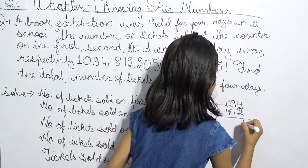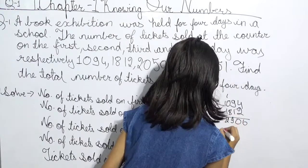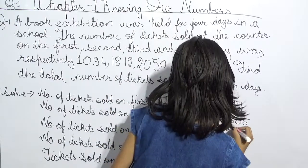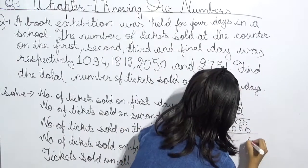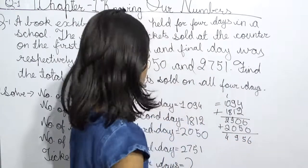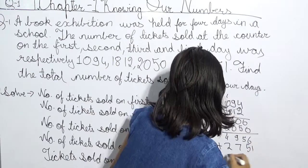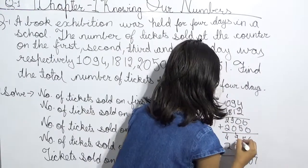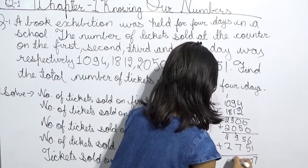Here we have 6, 10, carry 1, 9, and here we have 2. Now we have 2050, then 6, 5, 9, 4. And then 2751. We get 7, 0, here we have 10, 7, here we have 1, here we have 7.